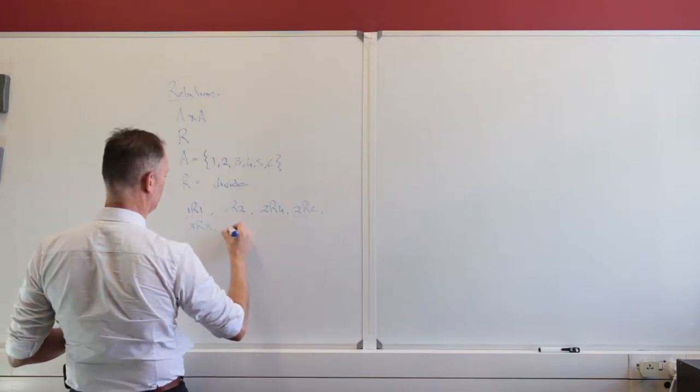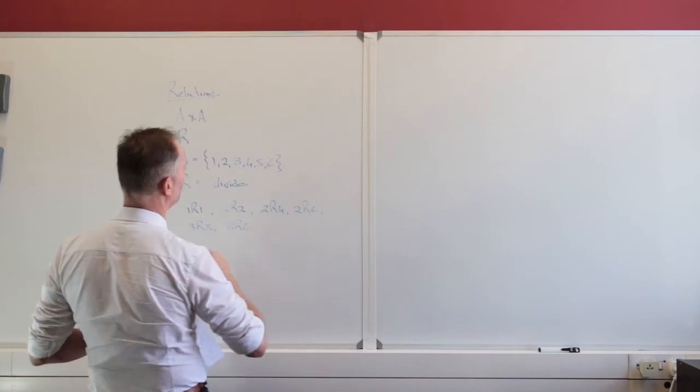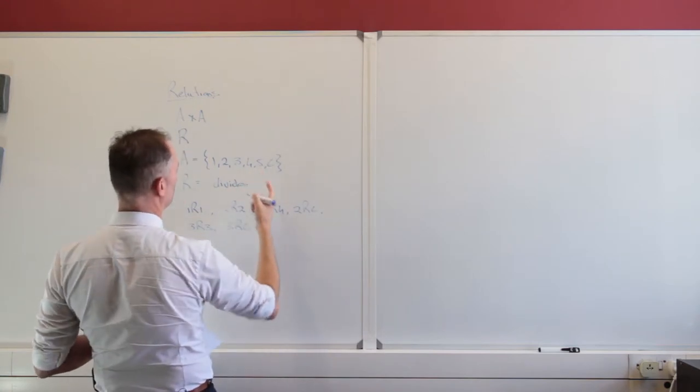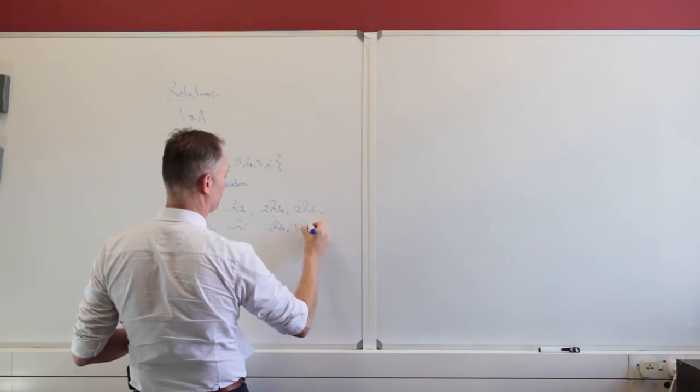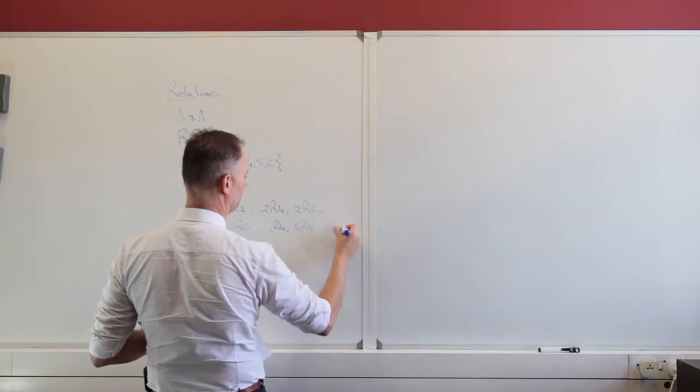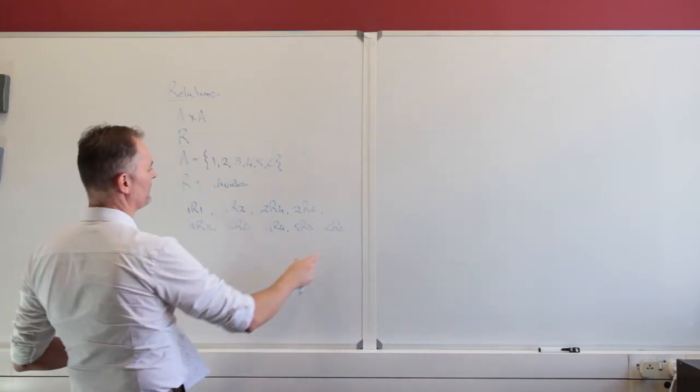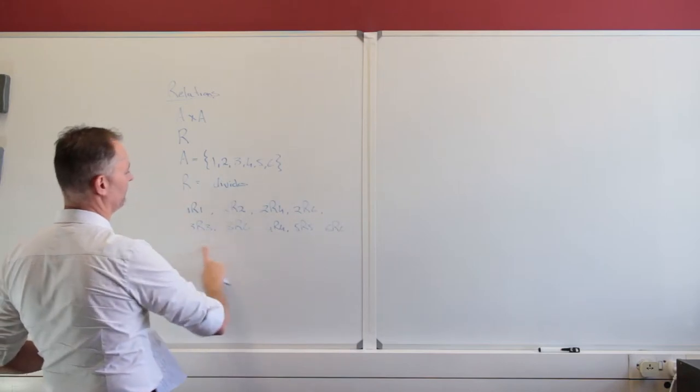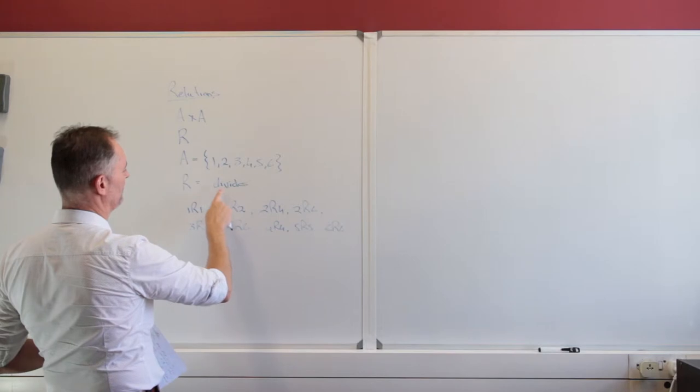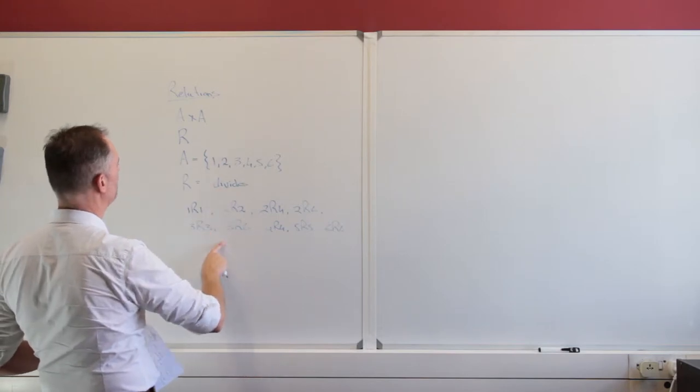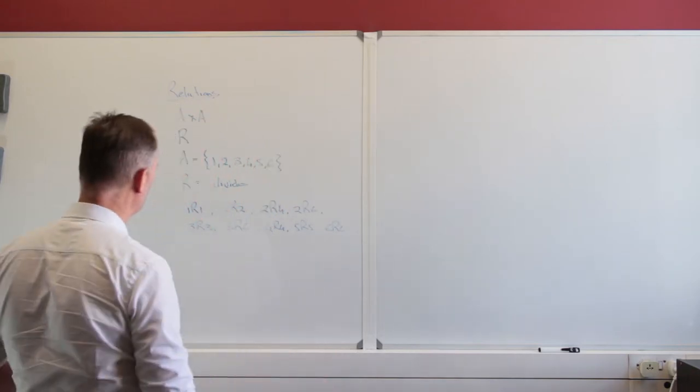And 4 does not divide 6. 4 divides itself. 5 divides itself. And 6 divides itself. So this will be the relation, or the elements of this relation divides. It is a subset of this product set, which means that we can really write this in two ways.